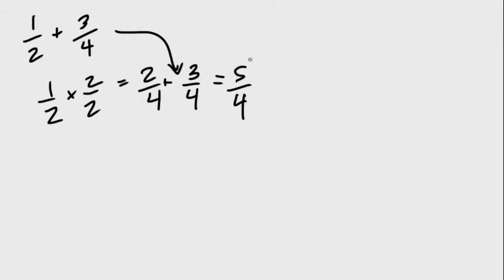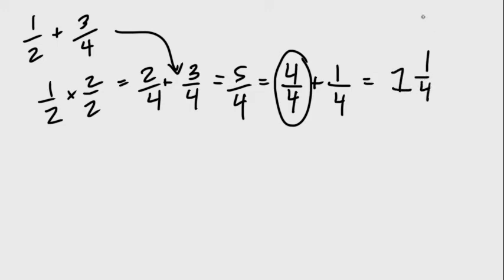And we know that this is equal to four over four plus one fourth. And we know that any number over itself is always one. So that's where we got the one and one fourths. That's how you would do that. Good luck.